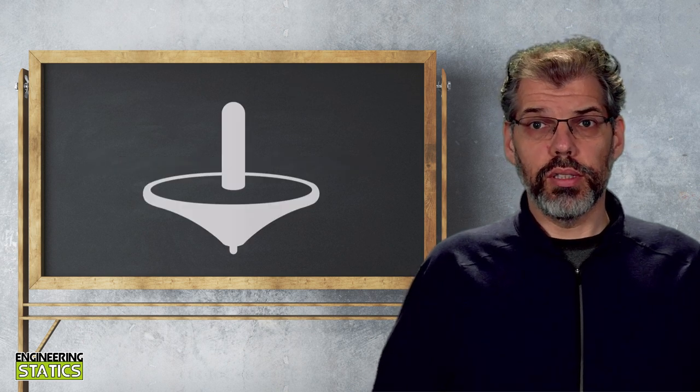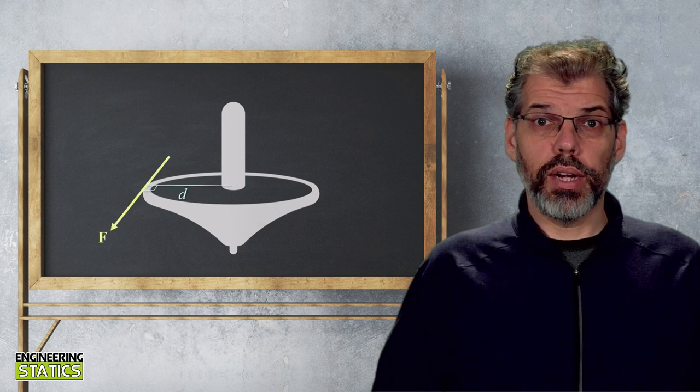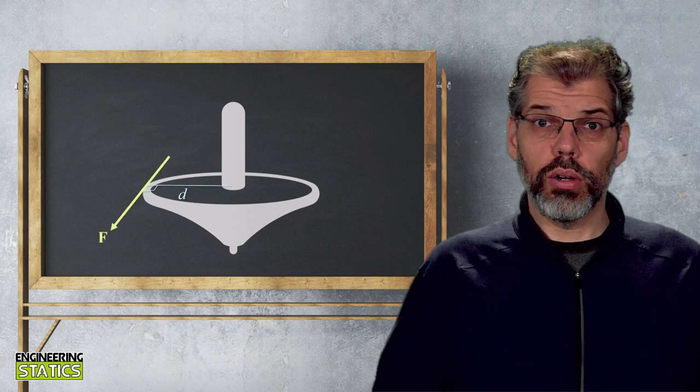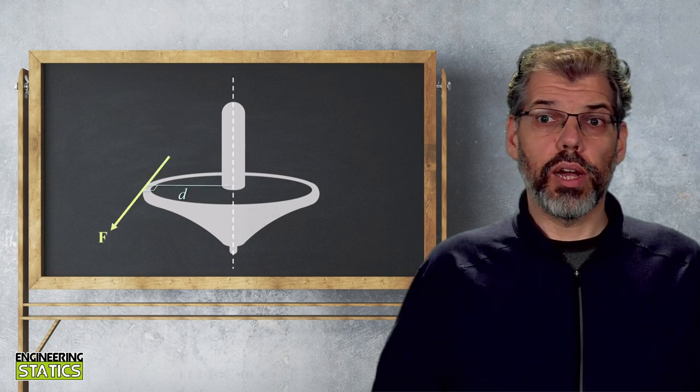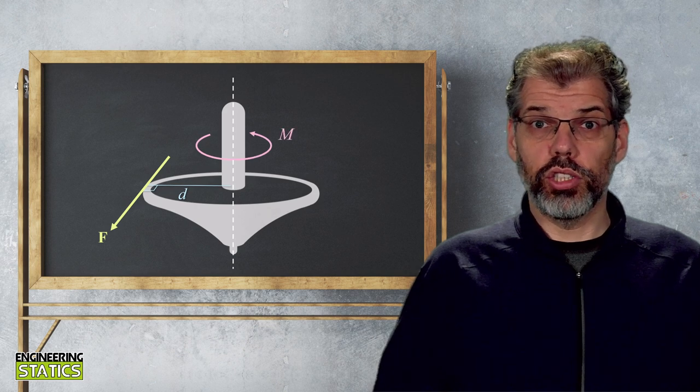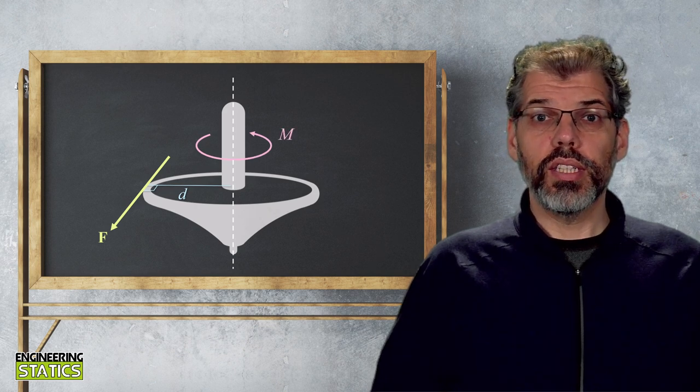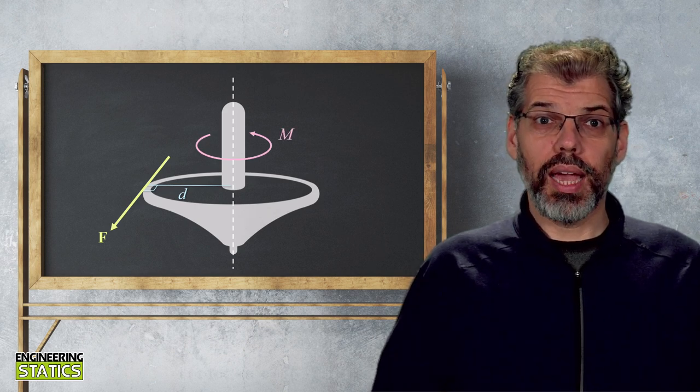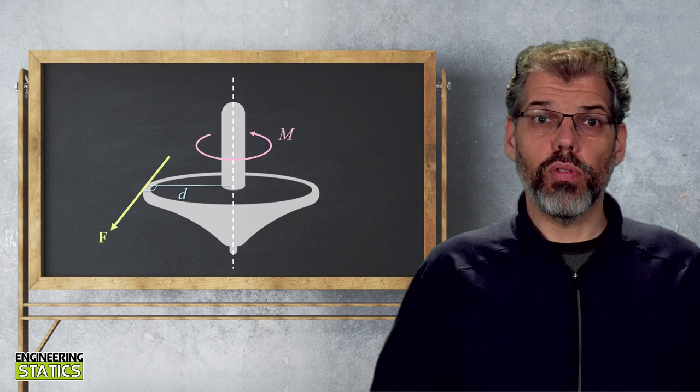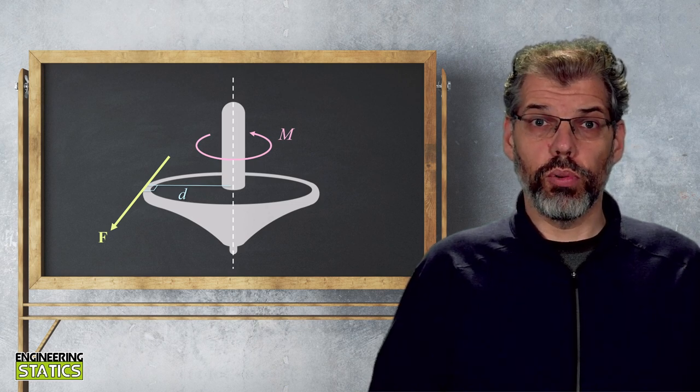Take this top for instance. If a force was applied on the edge of the top as shown here, it would want to rotate around its spinning axis in the direction shown here. This is intuitive for a top, but can we formulate a method for resolving the direction for a general force system?